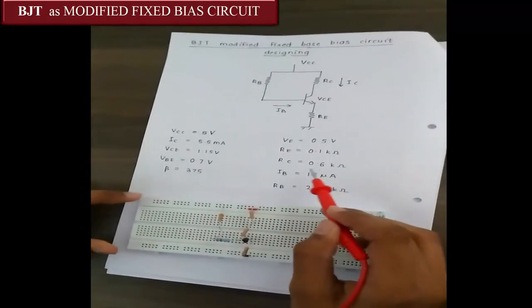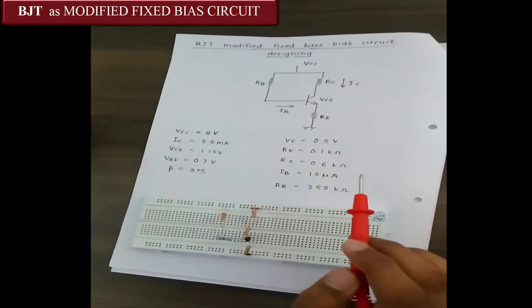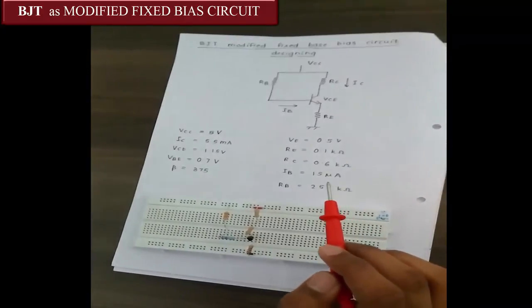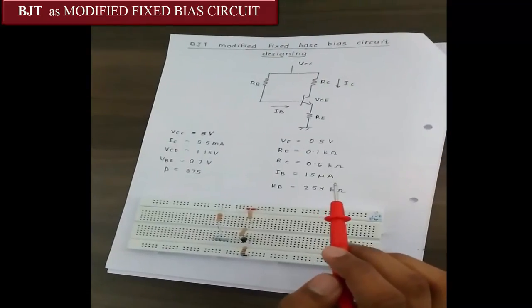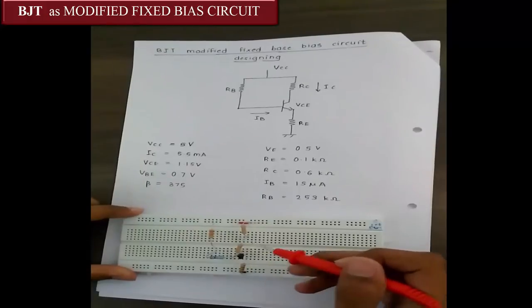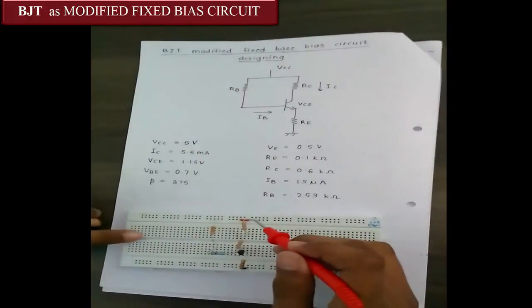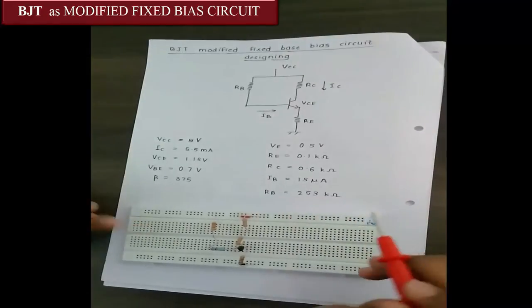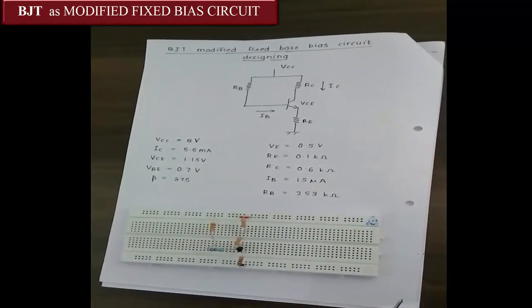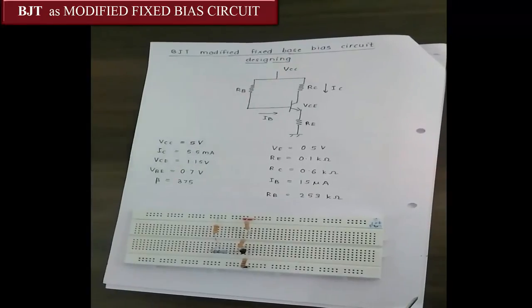The collector resistance is of 0.6 kilo ohm that is 600 ohms. For getting 600 ohms and the available resistances were of 330 ohms, we have used two 330 ohms each and they are connected in series. That gives us a total of 660 ohms. This is also given to VCC. Now, let us look at whether the obtained values match with the inputs that we are giving and whether the designing is correct.